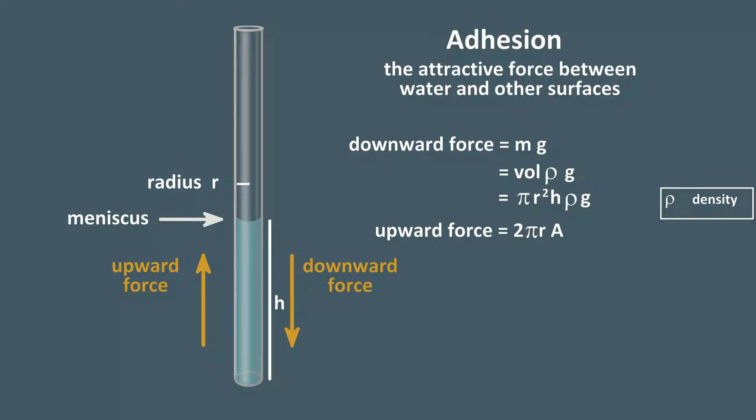The upward force has to be proportional to the circumference of the circle at the meniscus, 2 pi r times some adhesive force constant, let's call it A for now, which represents the attraction between the liquid molecules and the material of the tube.